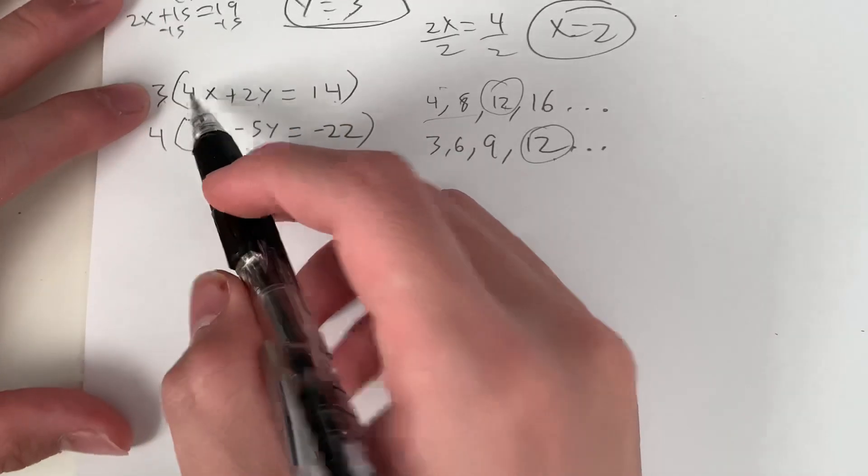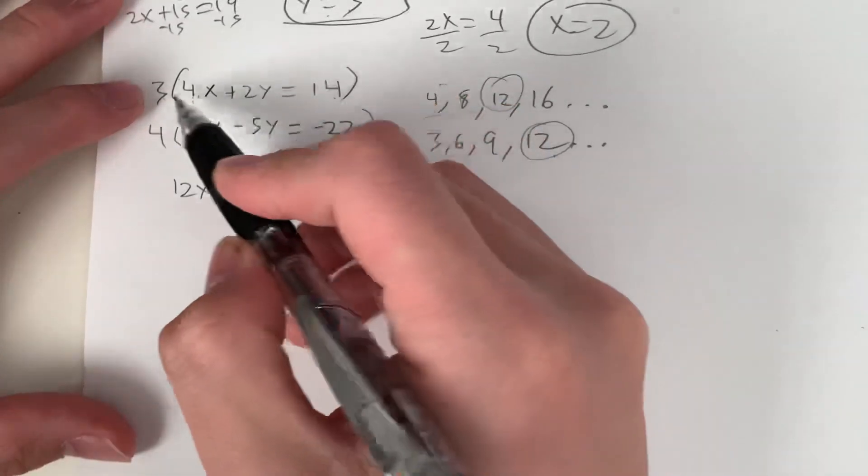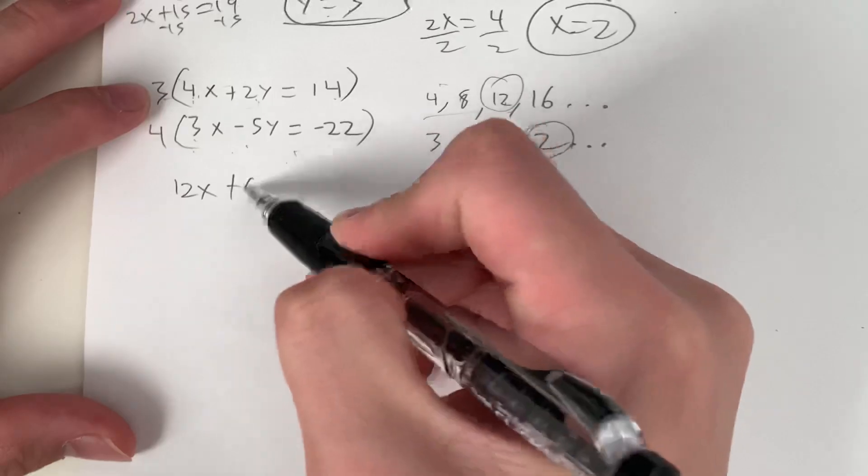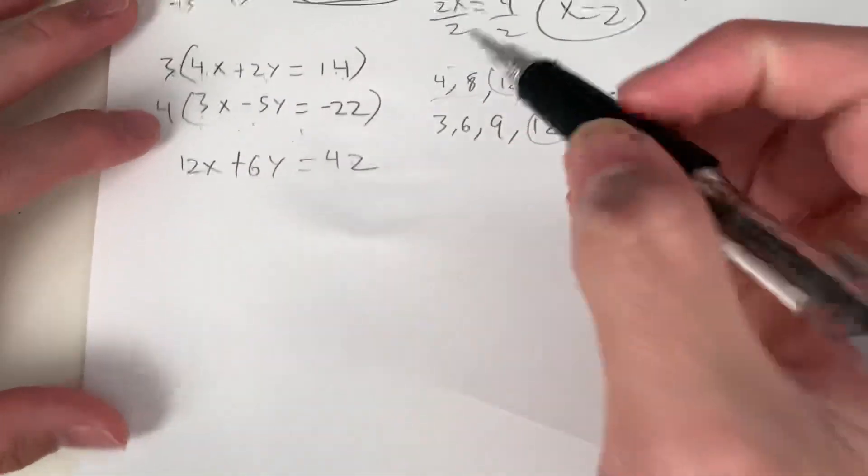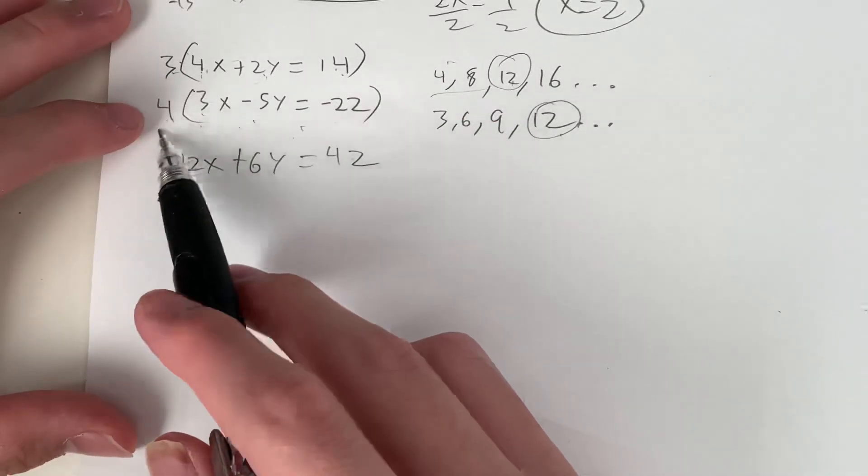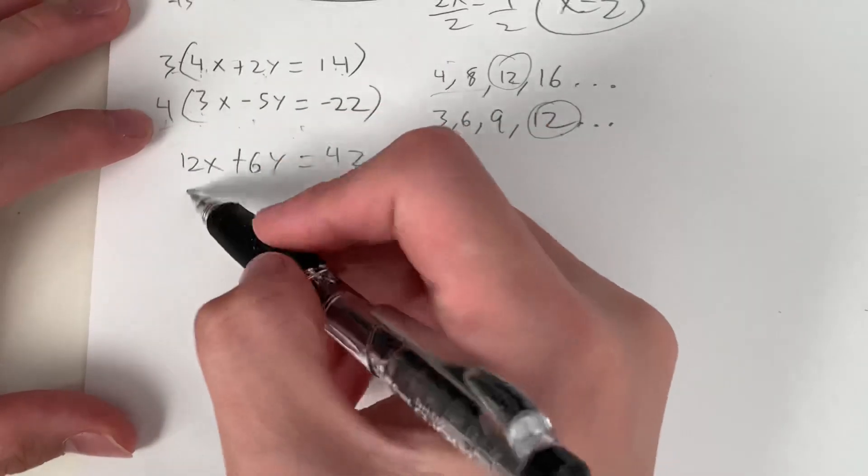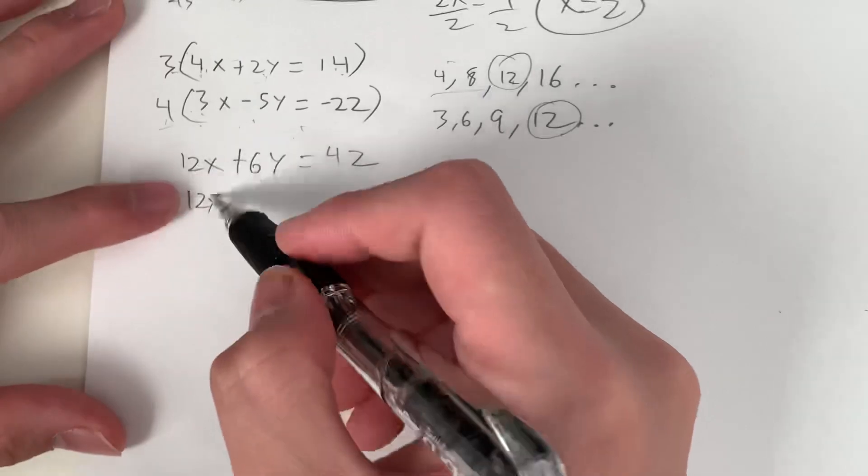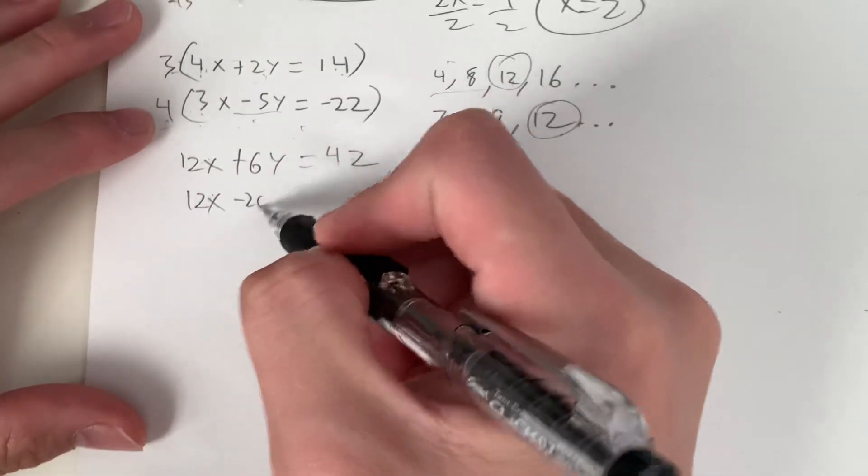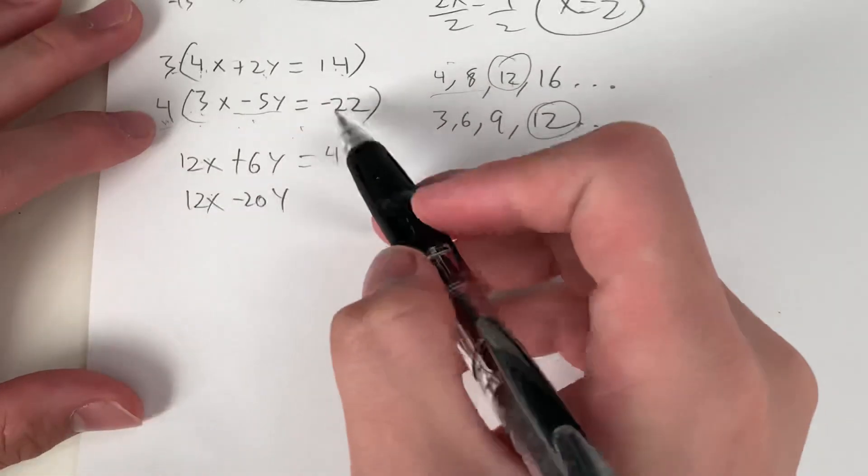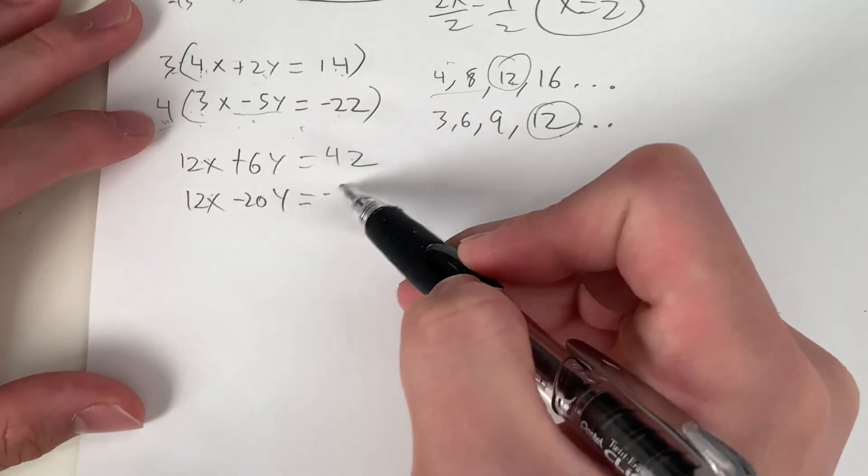So what's 3 times 4x? That's 12x. What's 3 times 2y? That's 6y. And that's equal to 3 times 14, which is 42. Now we do the same thing for the lower equation. So it's 4 times 3x, which is 12x. And as long as these two align, you're looking good. 4 times negative 5y is negative 20y. And 4 times negative 22 is negative 88.